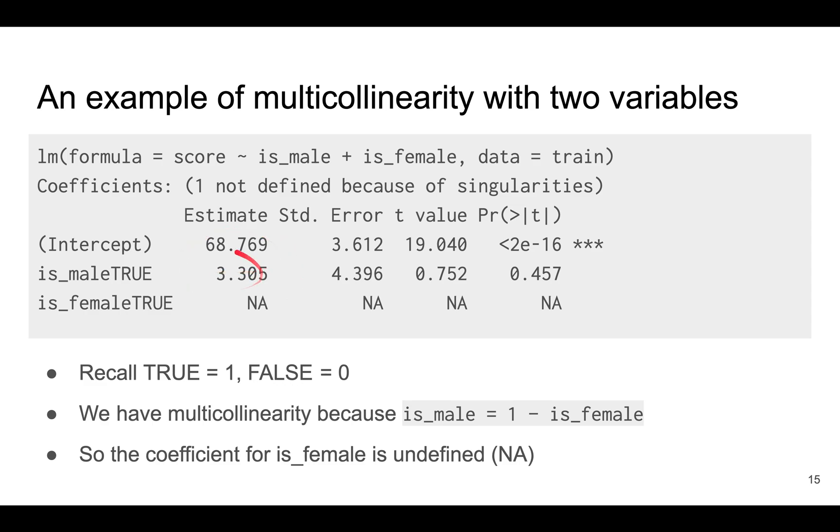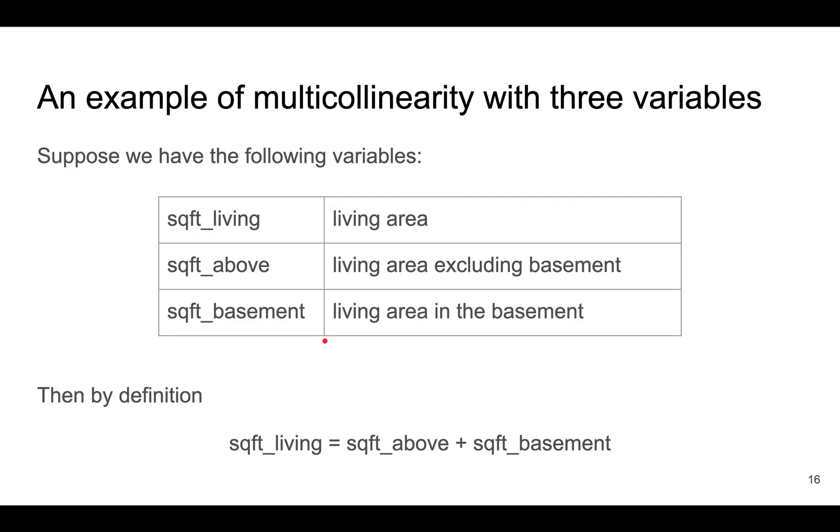You do get a good estimate for is_male, but there's no point trying to get a better estimate for is_female. Here's another example where there are three variables, where the square foot of the living area equals the square foot of the above area and the square foot of the basement area.